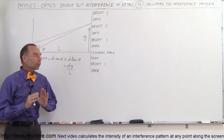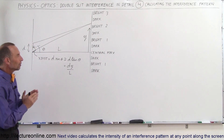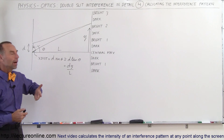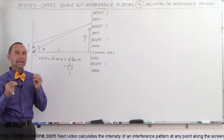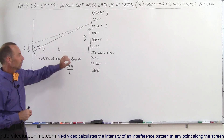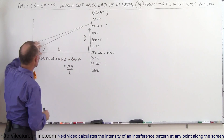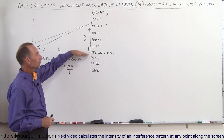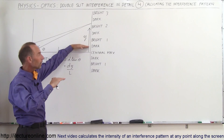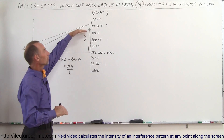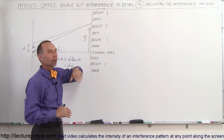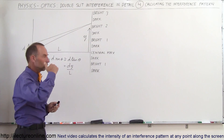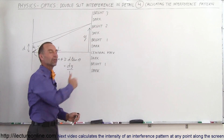Welcome to ElectronLine. What we're going to do here is find where on the screen we're going to find the dark and the bright spots. So we're going to see what we call an interference pattern. At the very center, directly across the two slits, you'll see the central maximum. And then above the central maximum it'll go dark and then you'll see a bright spot, go dark, see a bright spot, go dark, see a bright spot. So we see a series of dark and bright spots on the screen.